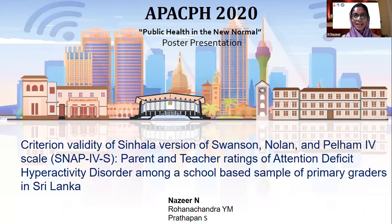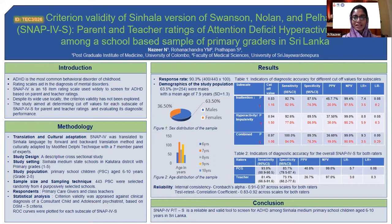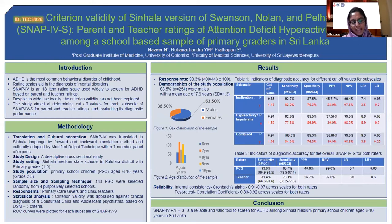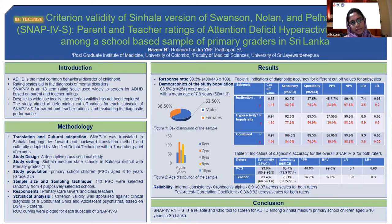Good afternoon. Today I'll be presenting the criterion validity of a Sinhala version of the SNAP-4 scale. ADHD is the most common behavioral disorder of childhood, with cardinal symptoms of inattention, hyperactivity, and impulsivity. Diagnosis requires that symptoms are present in two or more settings and is informed by parents and teachers, making it more subjective.